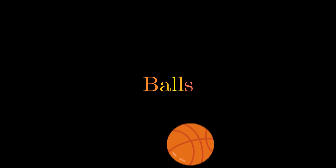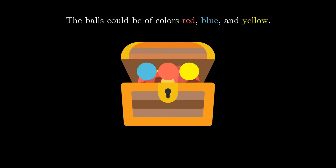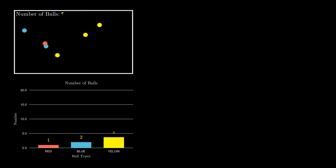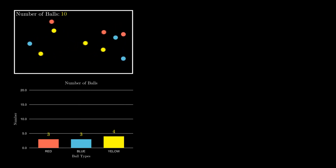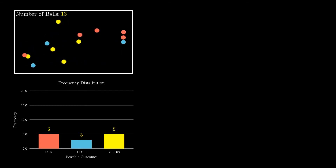Now we're going to talk about frequency, illustrating this using balls. Imagine a chest containing three colored balls — red, blue, and yellow. You are blindfolded and tasked to draw one ball. Below is the number of balls represented in bar graphs: as the number of balls increases, the bar graph value also increases. In this case we have four yellow balls, three blue balls, and five red balls.